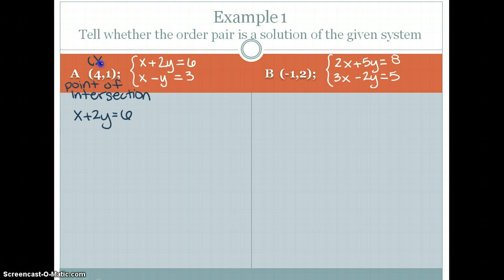Remember, all ordered pairs are x, y. So you have 4 plus 2 times 1 is equal to 6. 4 plus 2 is equal to 6. 6 is equal to 6. So the first equation checks.